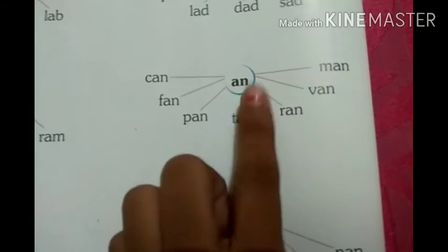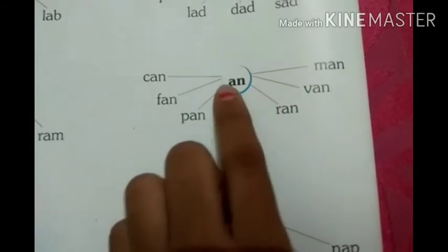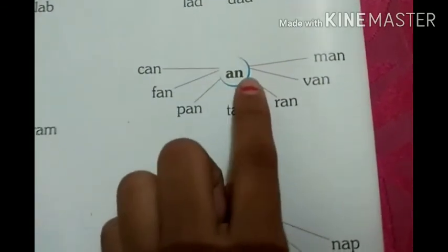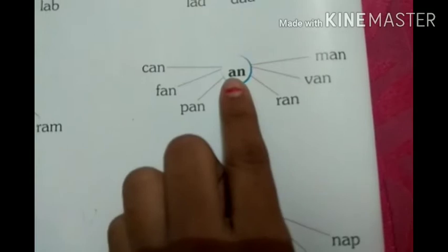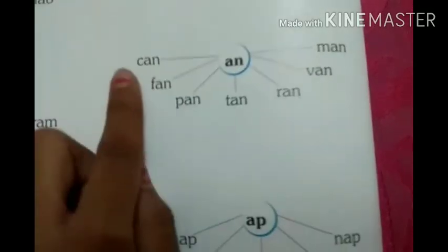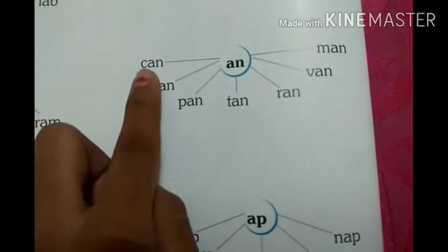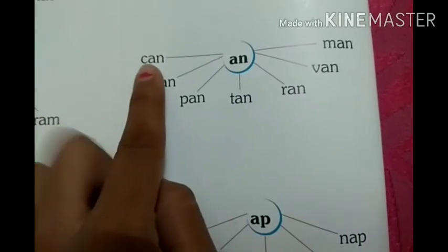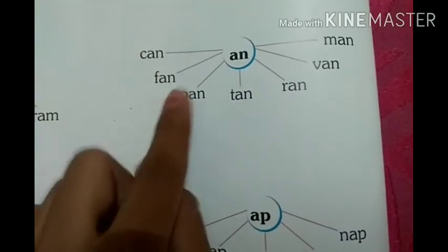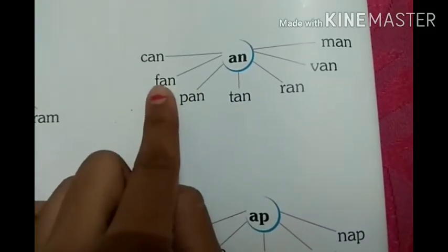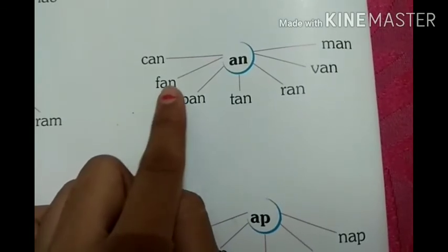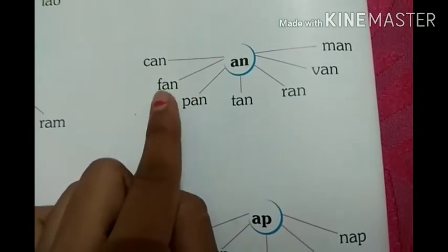A and N — AN. A, N — AN. What is the sound of C? K, N — CAN. What is the sound of F? F, N — FAN.